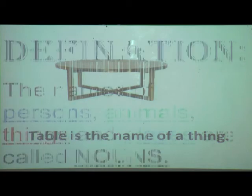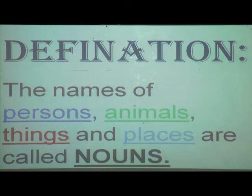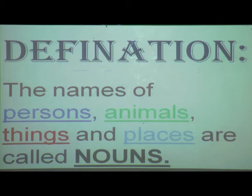Understood? So how do we define noun? The names of persons, animals, things, and places are called nouns. You can find this definition in your book on page number 17 in a pink block — make a star so you can remember it. Again: the names of persons, animals, things, and places are called nouns.